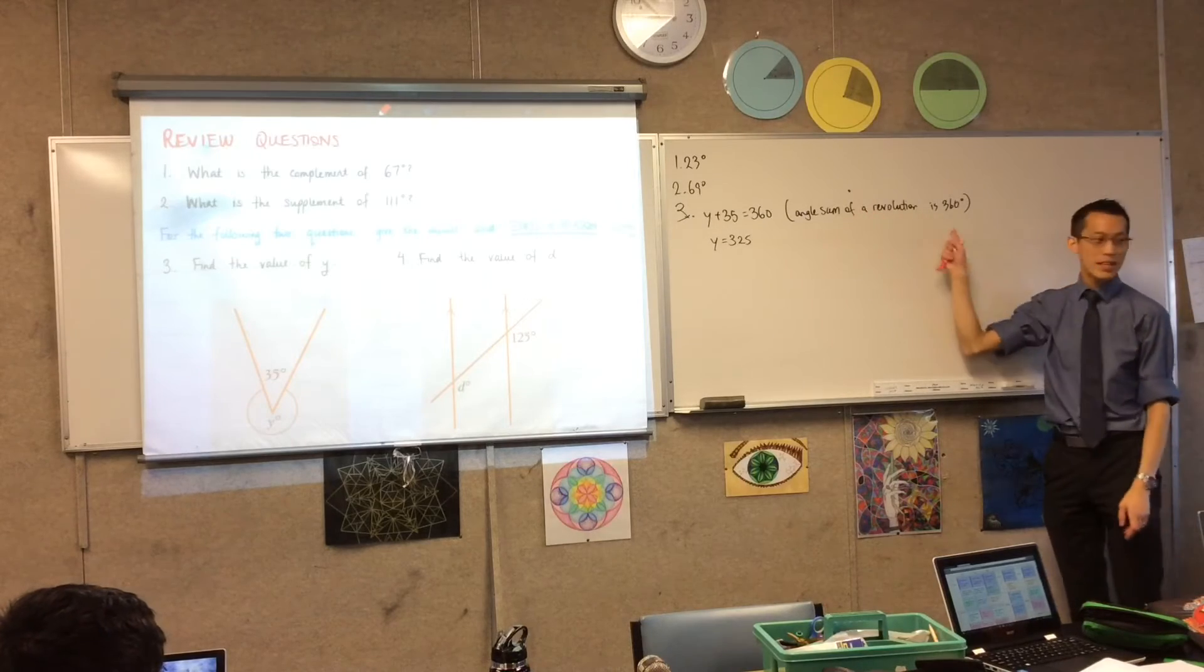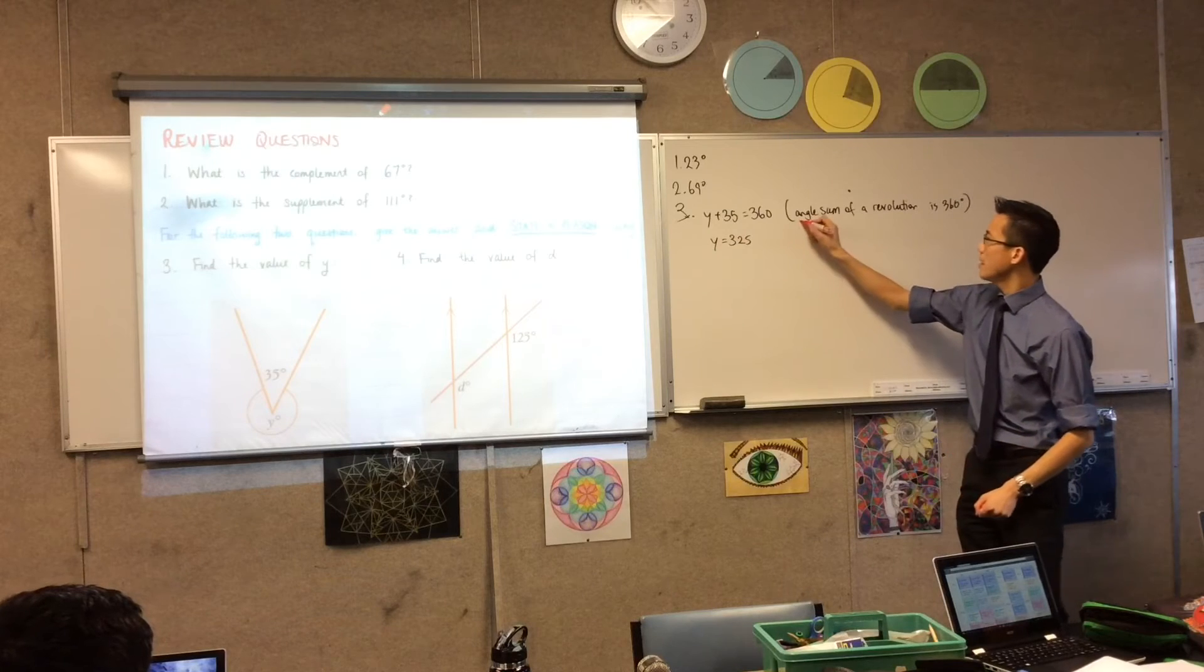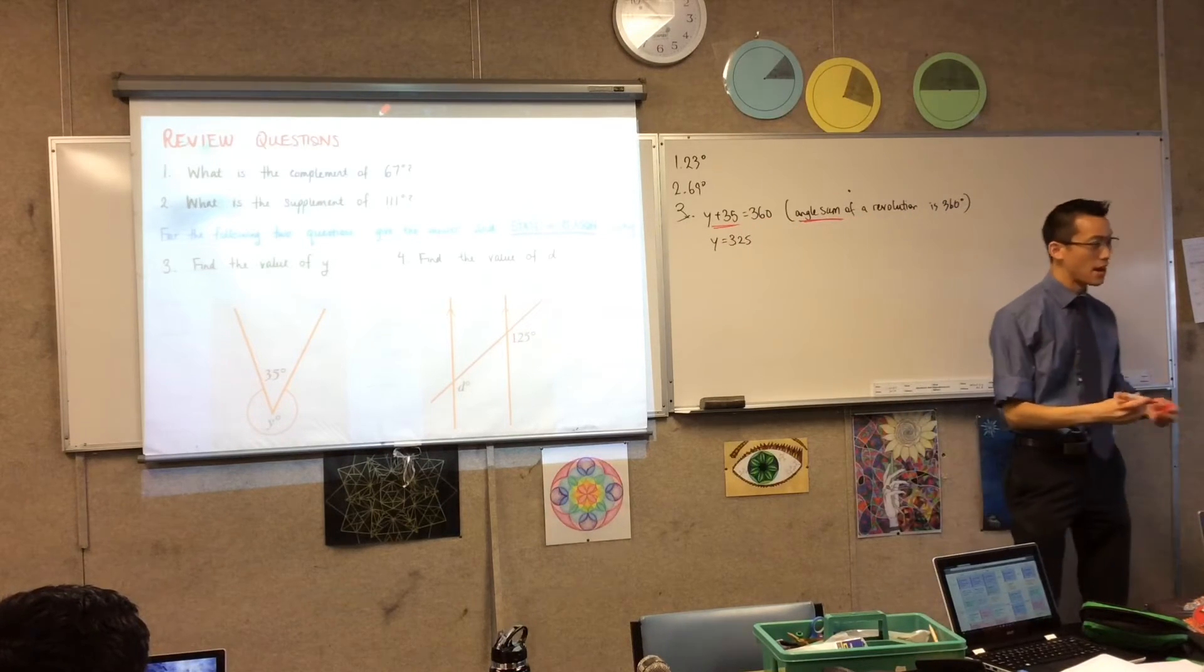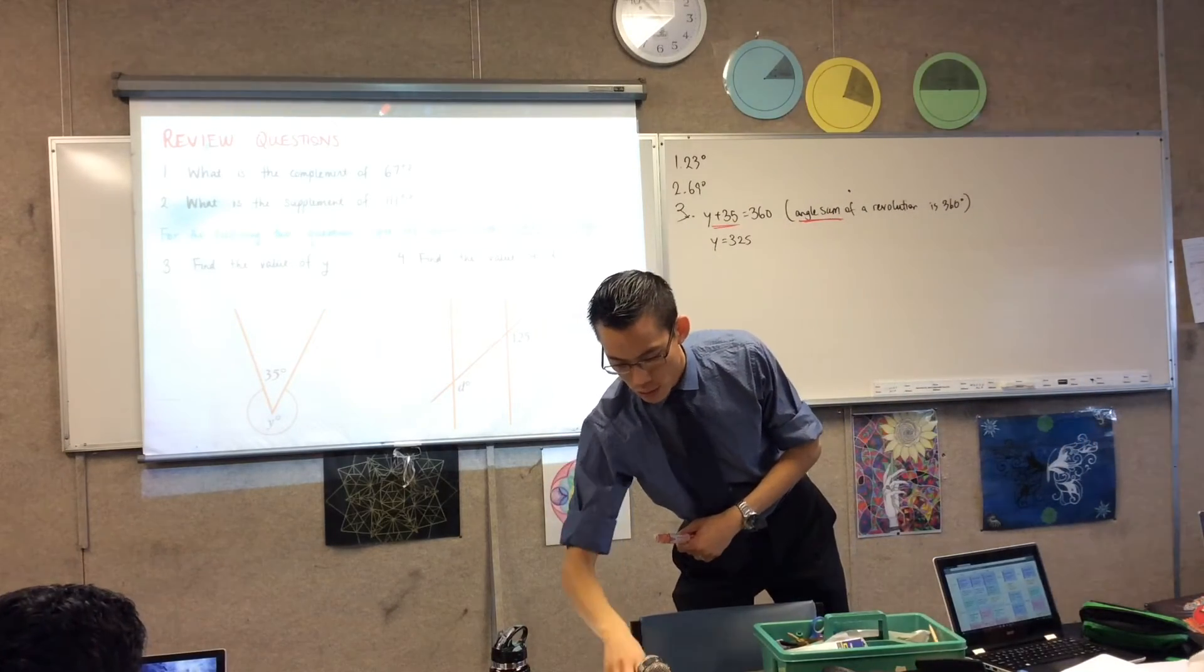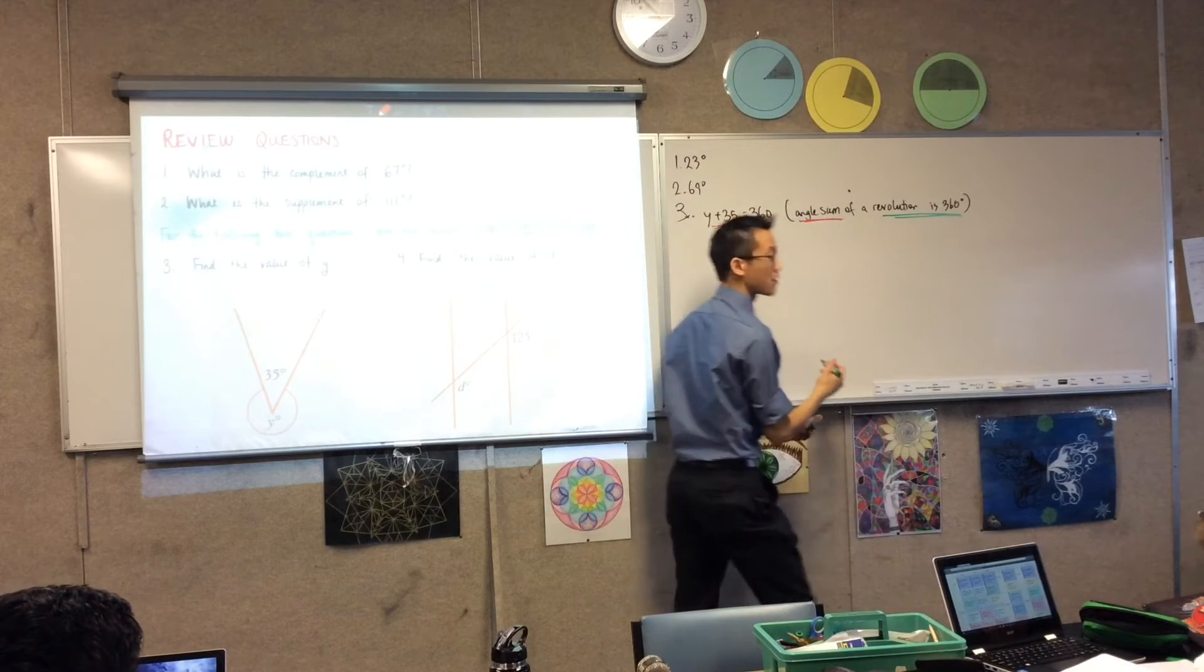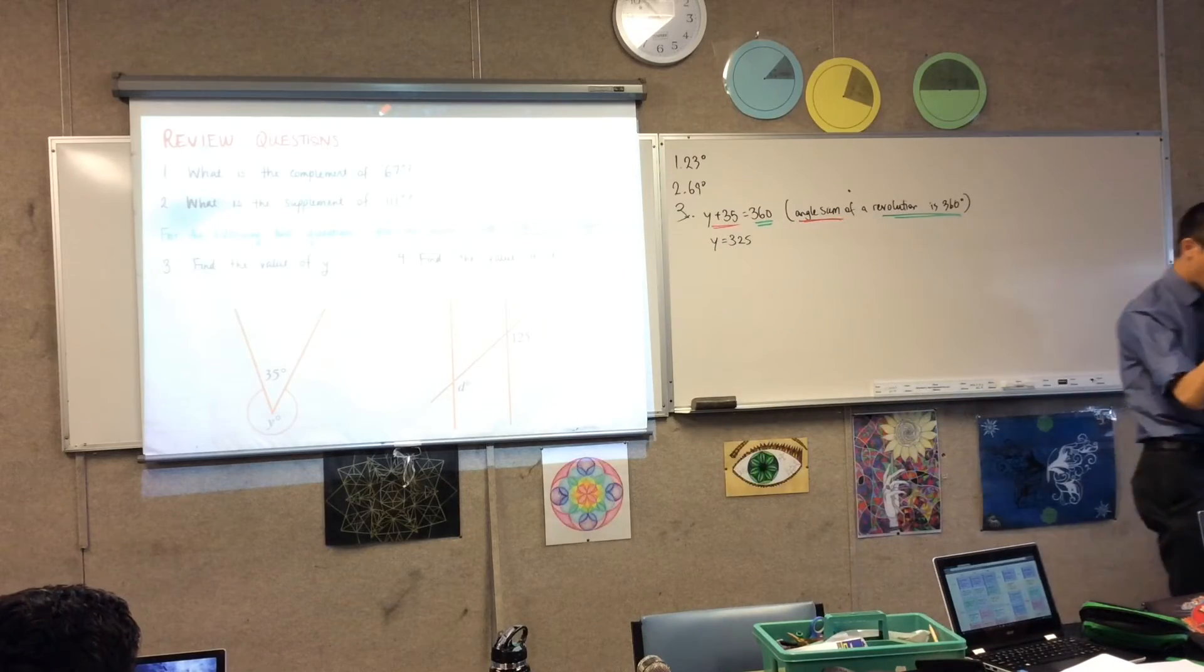And you can see that this reason, the words, they match up to the equation. Do you see that? The angle sum is this left-hand side here. Y plus 35, that's the sum. And the revolution, adding up to 360, here we go, a revolution is 360 degrees. There it is, right there.